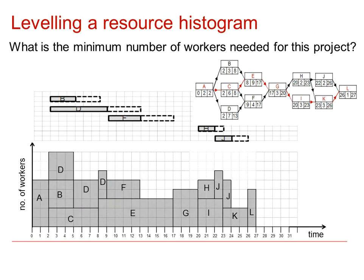Another question we might answer is: what's the minimum number of workers required for a project, assuming that it's going to finish on time? The way we drew our resource levelling diagram to start off with had a maximum number of workers of 8. But we've got the possibility of moving some of the activities to see if we can reduce it. The first point we could look at is at the end, where if we move J into a single block, we've now reduced that to 5 workers. So can we actually get down to 5 workers in the first part?